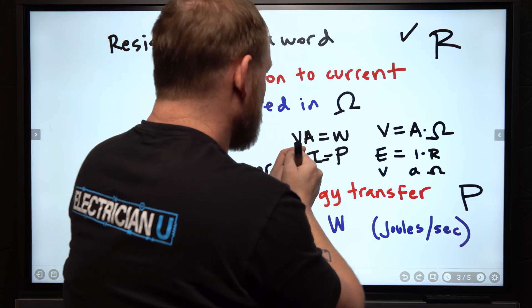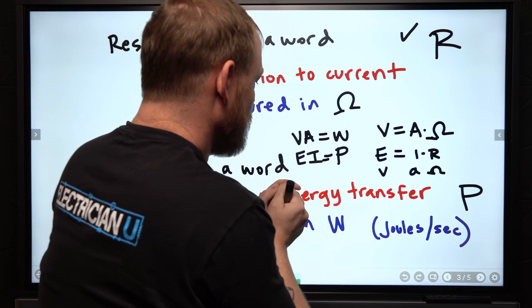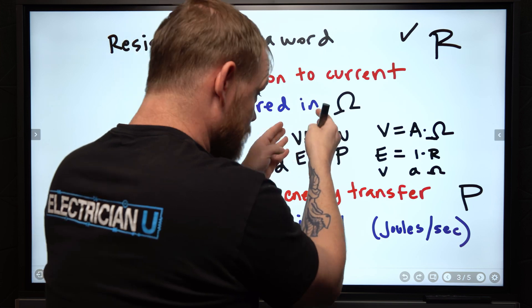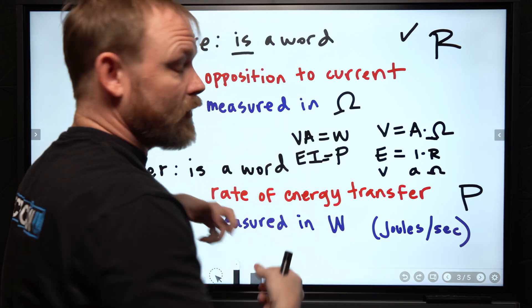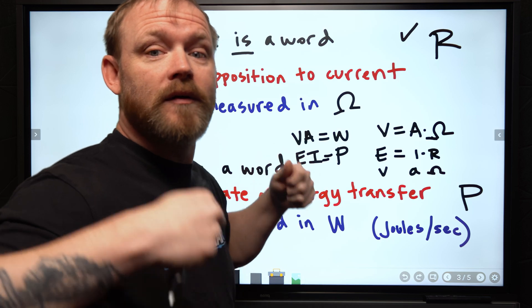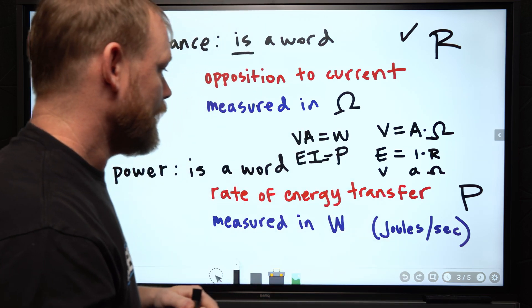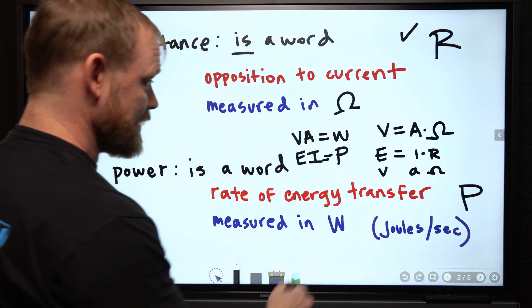Because we're measuring the power, the rate of energy transfer should be whatever the rate of charges flowing through a circuit is at whatever times whatever electromotive force is causing that to happen.